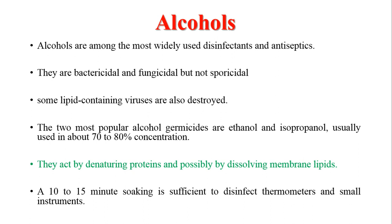We are currently using ethanol-based hand sanitizers to kill the COVID-19 virus because it has an envelope made up of lipid. The two most popular alcohol germicides are ethanol and isopropyl alcohol, also called isopropanol, usually used at around 70–80% concentration. They act by denaturing proteins and possibly by dissolving membrane lipids. A 10–15 minute exposure with ethanol or isopropyl alcohol may kill microorganisms on instruments or surfaces.